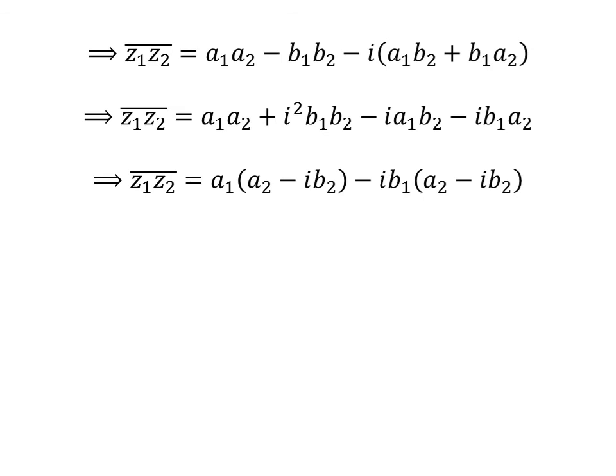Taking out the common factor a1 from the first and third terms of the right-hand side, and taking out the common factor minus i times b1 from the other two terms, gives us the conjugate of z1 times z2 equal to a1 times (a2 minus i times b2) minus i times b1 times (a2 minus i times b2). Now taking out the common factor (a2 minus i times b2), we get the conjugate of z1 times z2 is equal to (a1 minus i times b1) times (a2 minus i times b2).